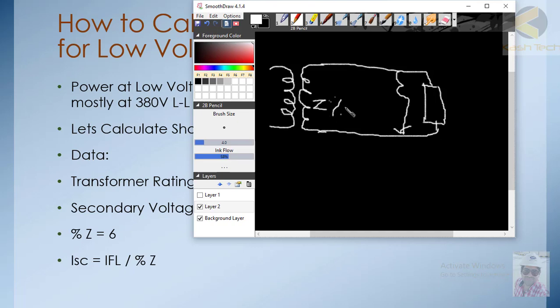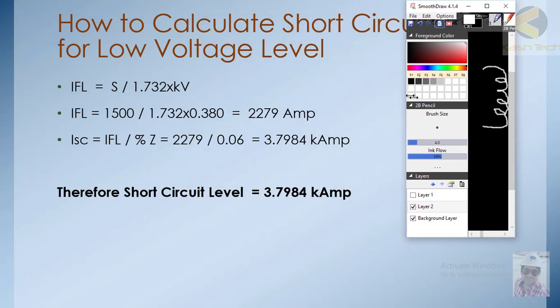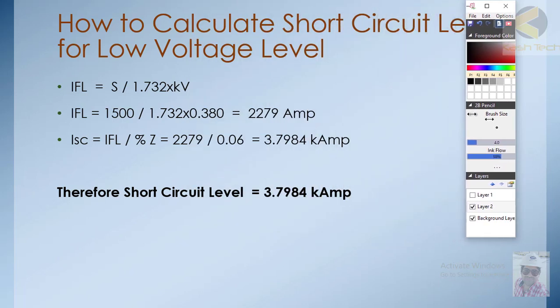The current will also be limited by the impedance of the cable itself, which is very small. In order to calculate how much fault current there will be, we divide the supply voltage of this transformer by the percentage impedance.